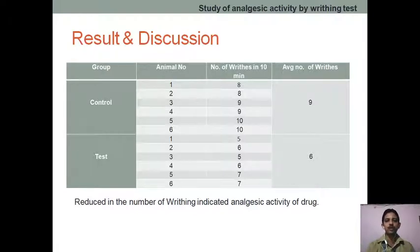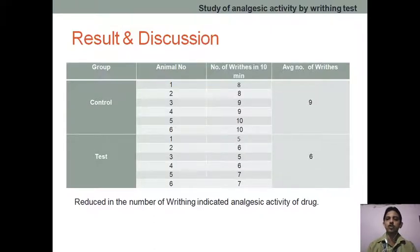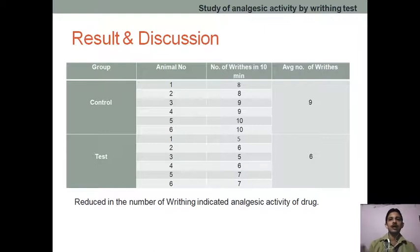I hope you have understood how we are writing this observation and report and what is involved in that. One important thing: prostaglandin production — whenever you talk about non-steroidal anti-inflammatory drugs, they are inhibiting COX-1 and COX-2, thereby inhibiting prostaglandin production. That is the mechanism through which they are useful in the writhing test.